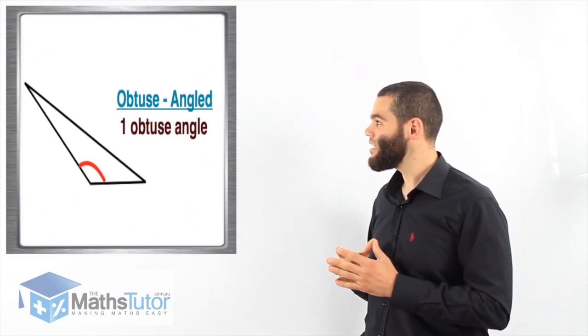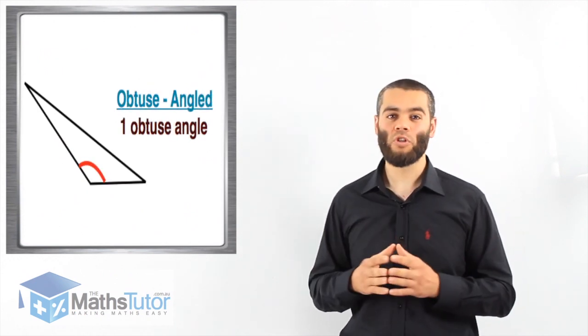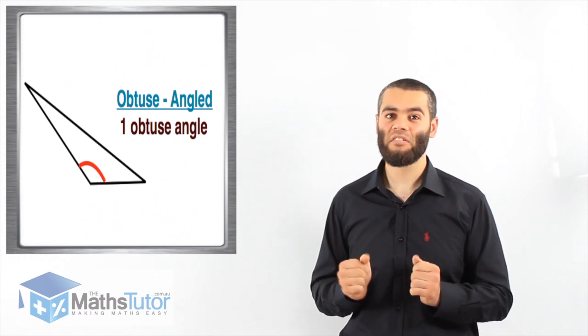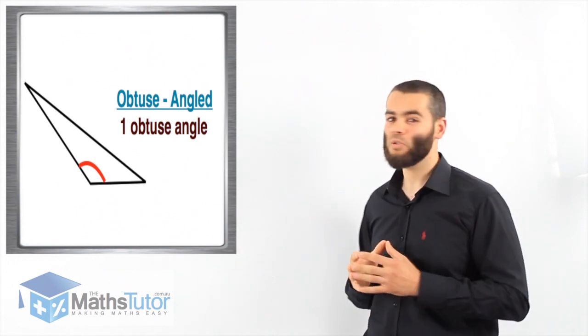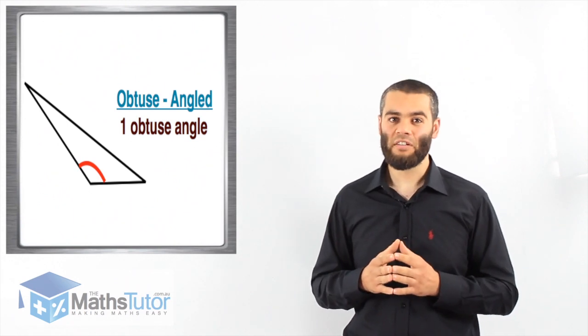And lastly, we have the obtuse angle triangle. As the name suggests, it has one obtuse angle, which is larger than 90 degrees.